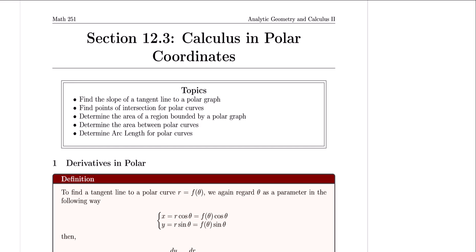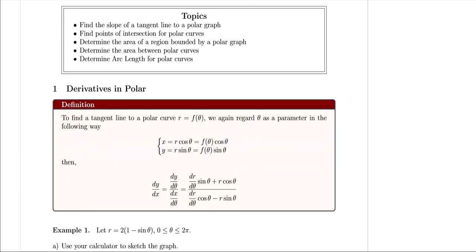How can we find derivatives in polar coordinates? Before we go over the definitions, remember that whenever we deal with a polar function, we define r in terms of theta, treating r as a function of theta. Also remember that when going from polar to Cartesian, x equals r cosine theta and y equals r sine theta. The key is parametric equations. To find a tangent line to a polar curve r equals f of theta, we treat theta as a parameter.